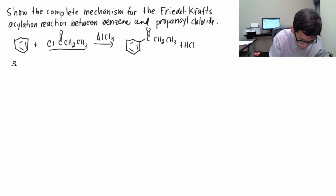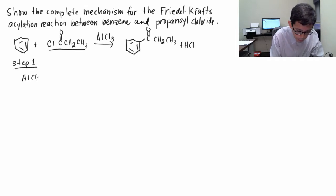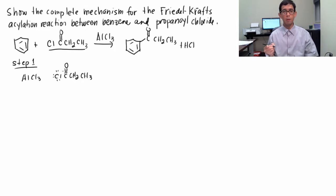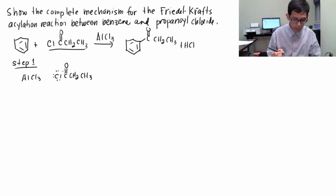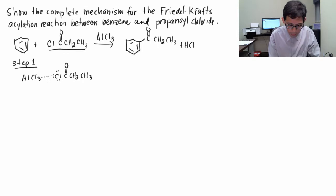Step one: formation of the electrophile. You have your Lewis acid, AlCl3, and then you have your propanoyl chloride — Cl, C double bond O, CH2, CH3. There are three lone pairs on the chlorine of propanoyl chloride, so that complexes with the AlCl3.